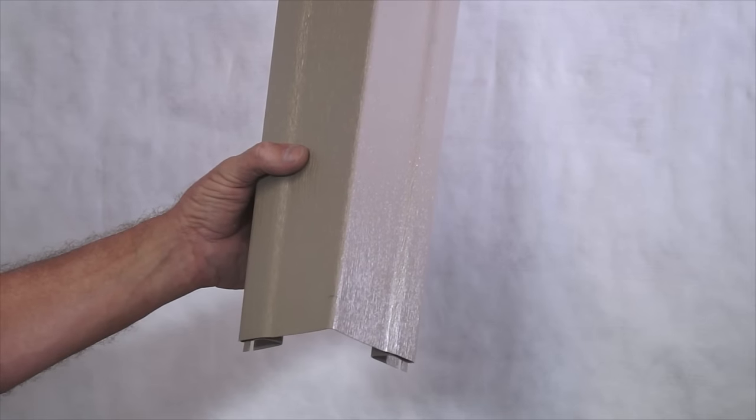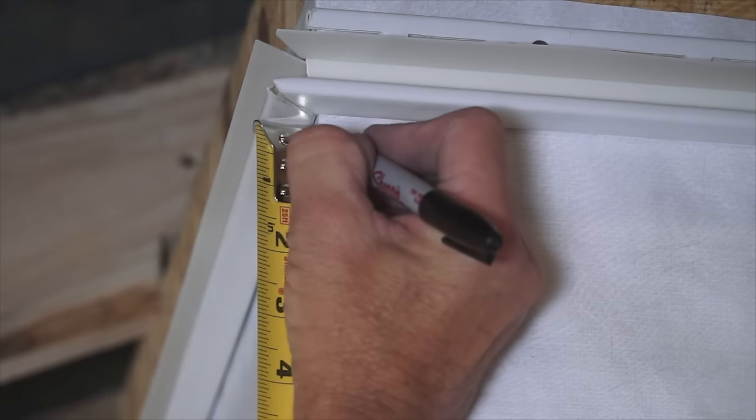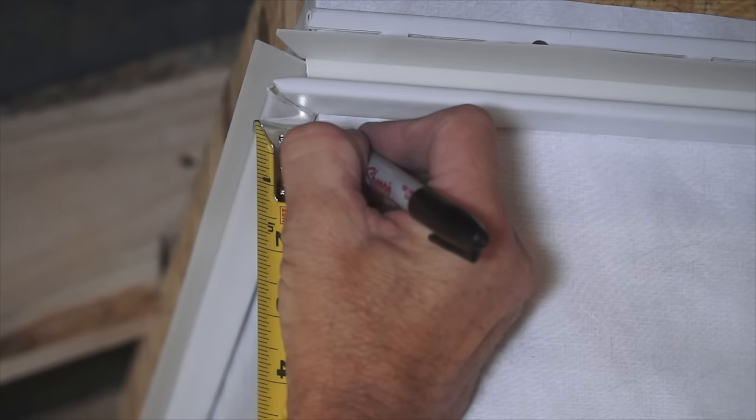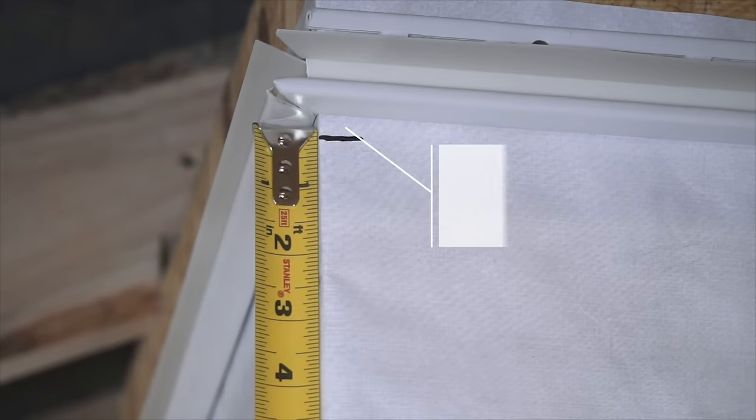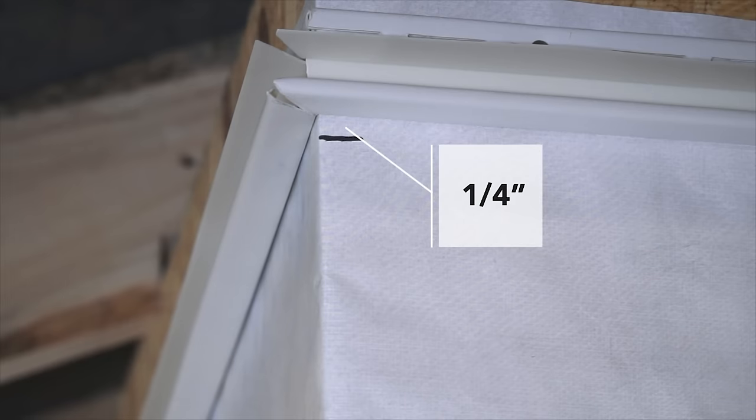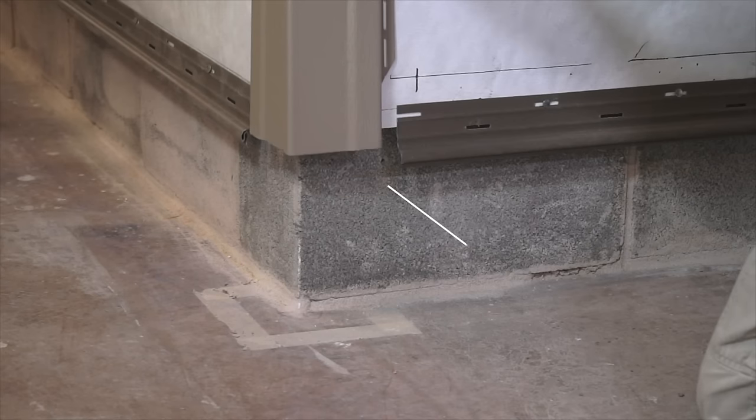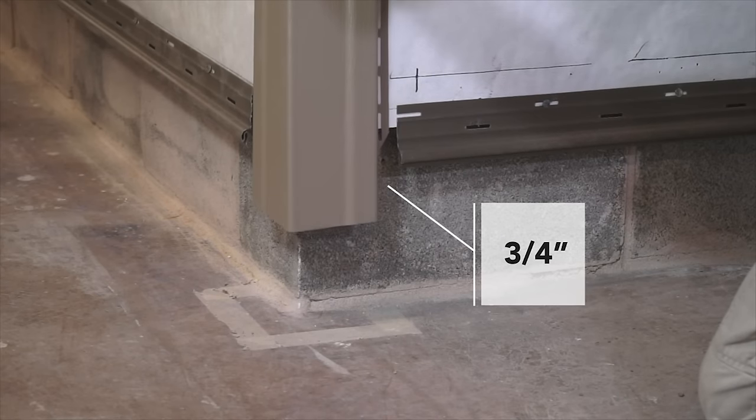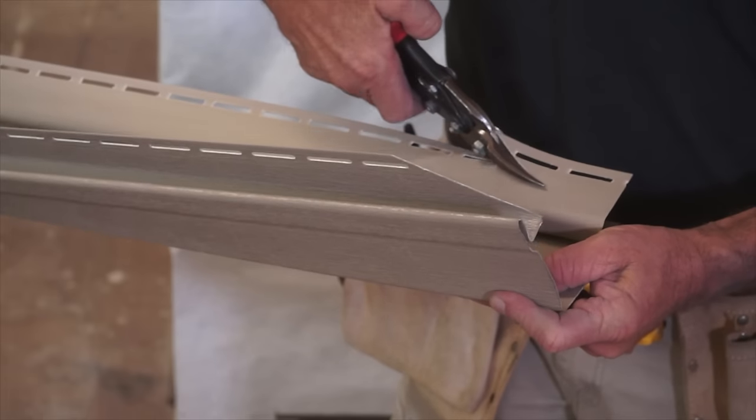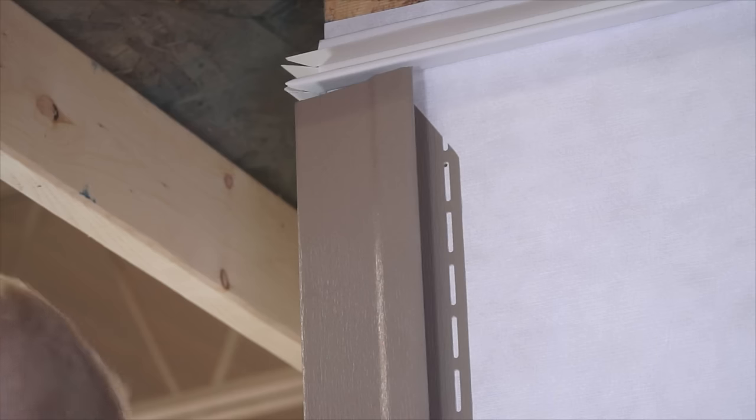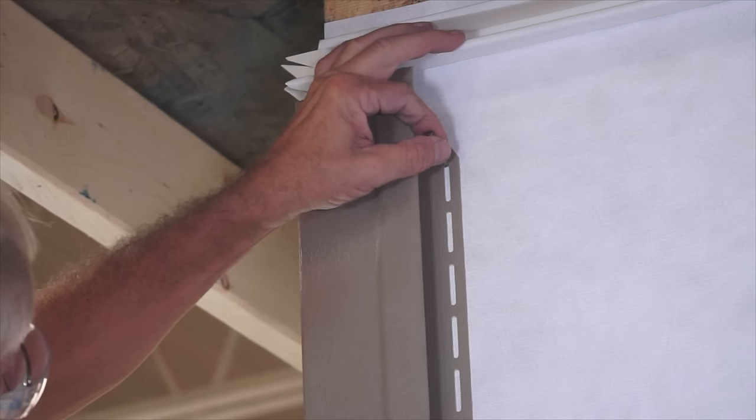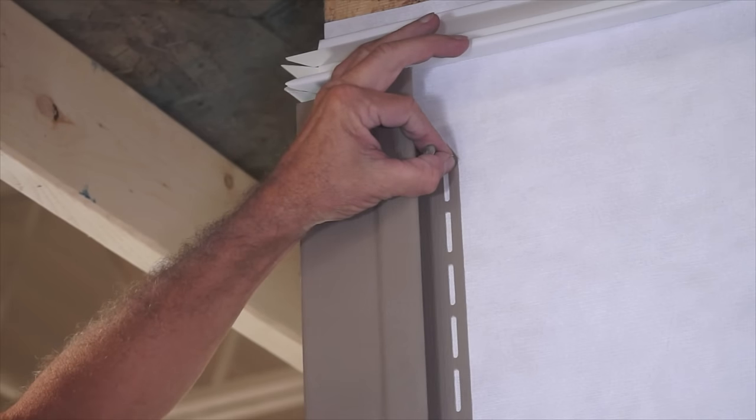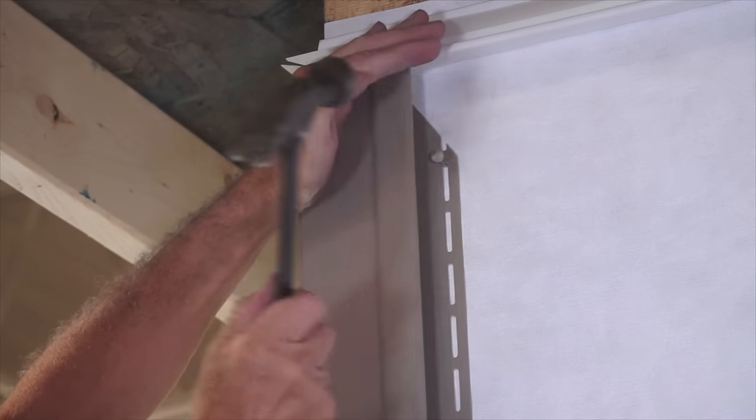Corner posts can be installed prior to the starter strip. Measure the length of the corner post needed so that it's 1/4 inch short of the underside of the eave or soffit, and extends 3/4 of an inch below where the bottom of the starter strip will be located. Cut the top and bottom nailing hems so they're not visible after the siding is installed. Position a nail at the top of the uppermost slot on both sides of the corner post, so the post will hang from the nails.